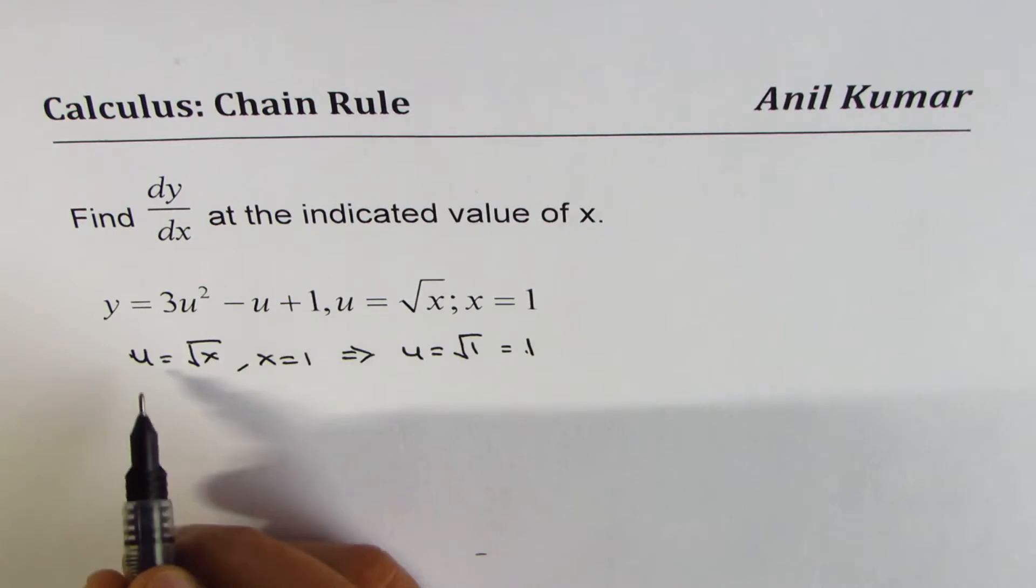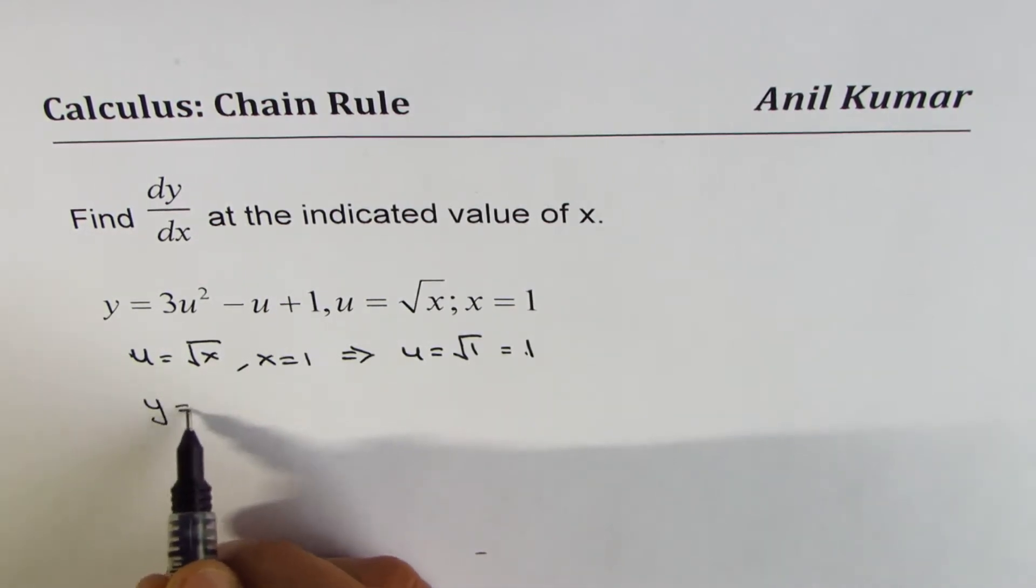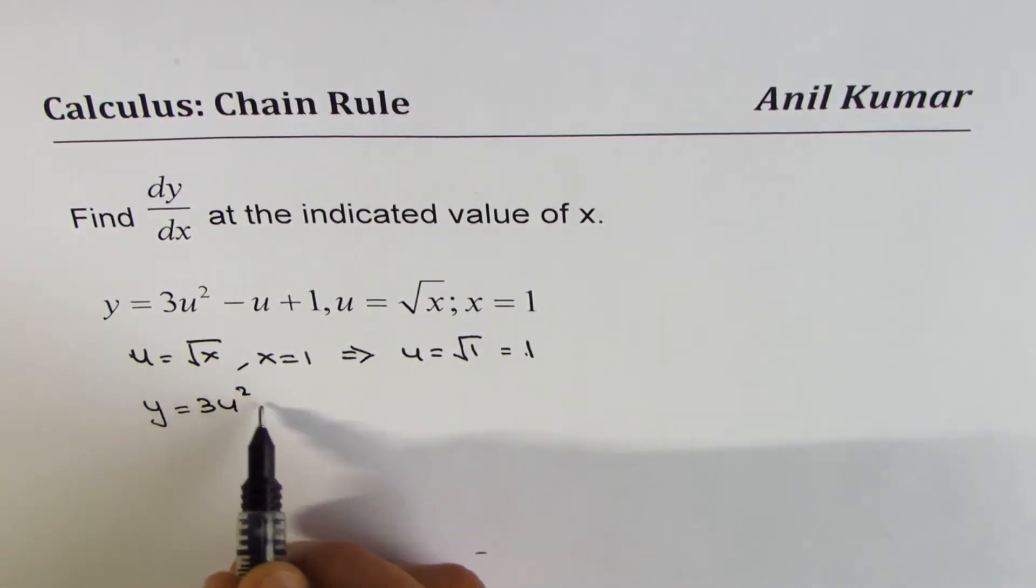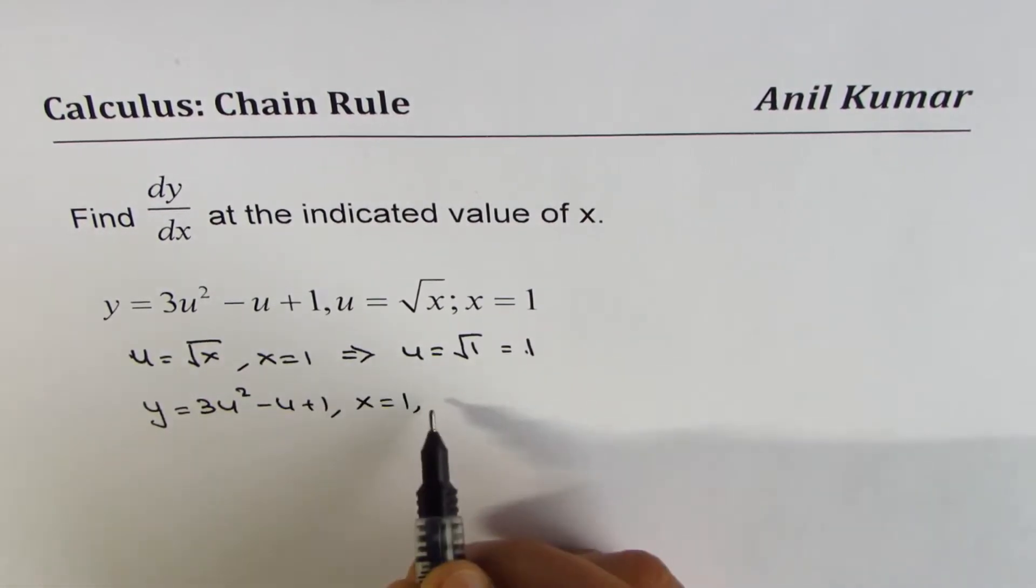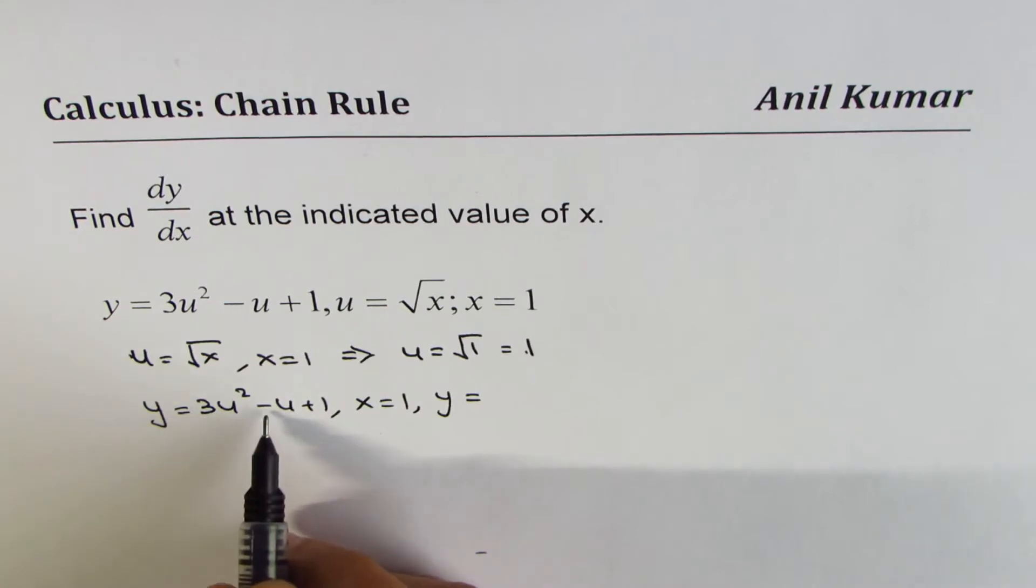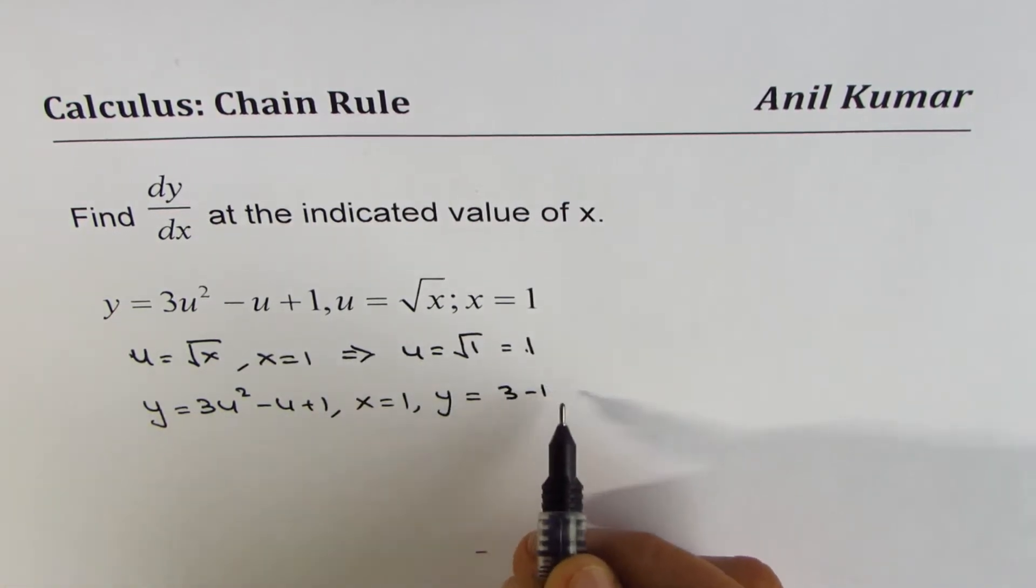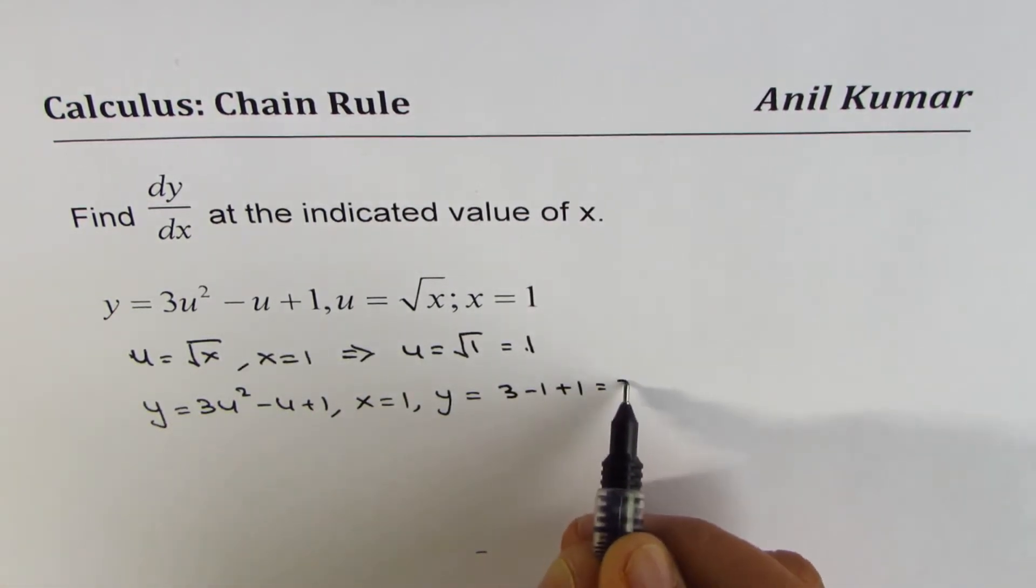Now if u is 1, what is y? We know y is 3u² minus u plus 1 and if x equals 1, then y equals 3 minus 1 plus 1, which is 3.